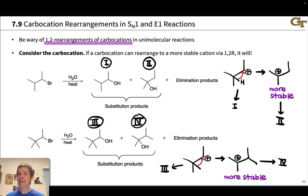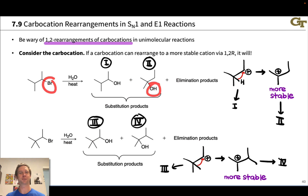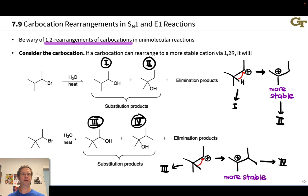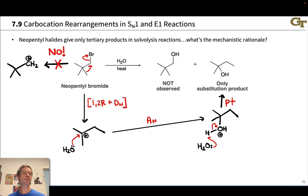As when considering the SN1 reaction, when E1 is occurring and we have a carbocation intermediate, it's very important to consider possible 1,2-rearrangements of the carbocation. This can affect the products of E1 elimination reactions. We showed examples where a carbocation rearrangement led to substitution products with the nucleophile linked to a different carbon from where the leaving group departed. This can also create situations in E1 reactions where the new double bond is not in a position originally associated with the leaving group, or groups appear to have moved around.